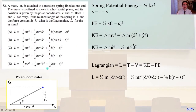Problem 82: a mass m is attached to a massless spring fixed at one end. The mass is confined to move in a horizontal plane, and its position is given by the polar coordinates r and theta. Both r and theta can vary. If the relaxed length of the spring is s and the force constant is k, what is the Lagrangian L for the system?